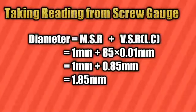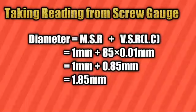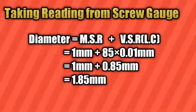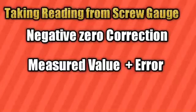To find the diameter, add the main scale reading plus the circular scale reading multiplied by the least count. Our main scale reading was 1 mm, and the 85th division was coinciding with the index line, so we multiply 85 by the least count: 85 × 0.01 mm = 0.85 mm. Adding 1 mm and 0.85 mm gives us 1.85 mm — the diameter of the wire.